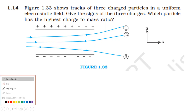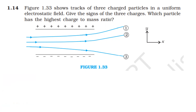So the sign of the first charge is negative, the sign of the second charge is negative, and the third charge is positive since it is attracted by the negative plate. We assume all the charges are projected horizontally with the same velocity u, so the initial velocity along the y-direction is zero.